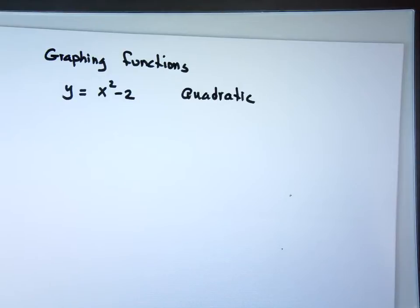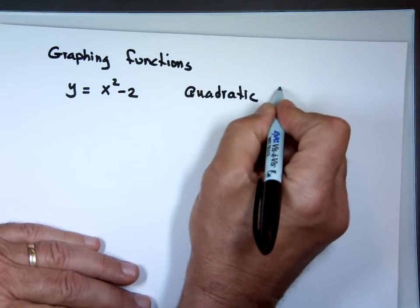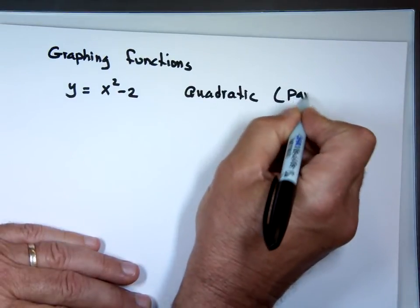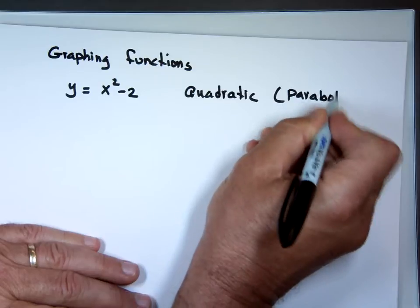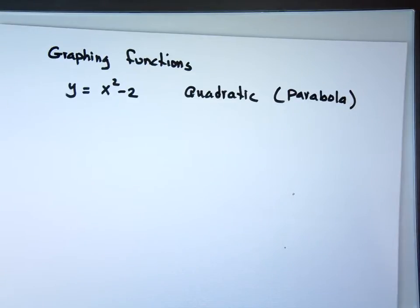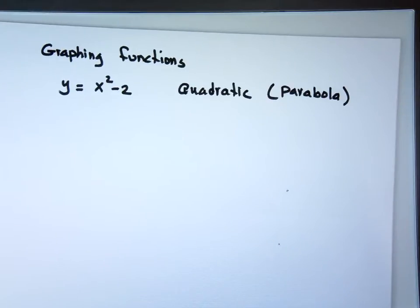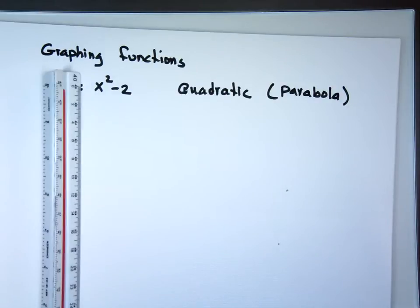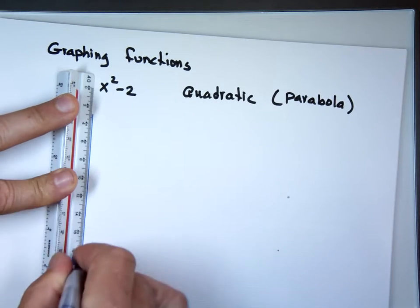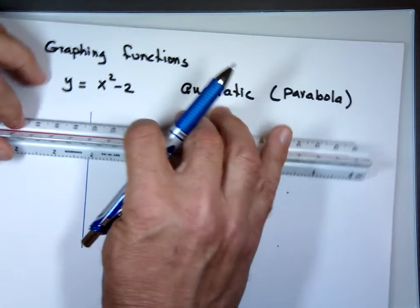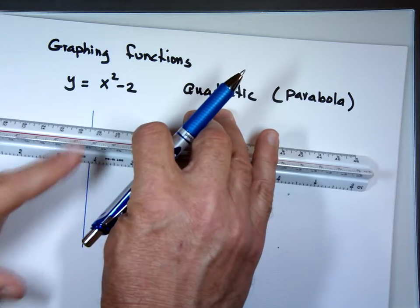Since it's not a straight line, the graph has a name — anyone know it? Yes, parabola. So the graph is going to be a parabola. How do you graph it? We make a table: we pick values for x and we compute the y value. Since it's not a straight line, you're going to need more than three points.